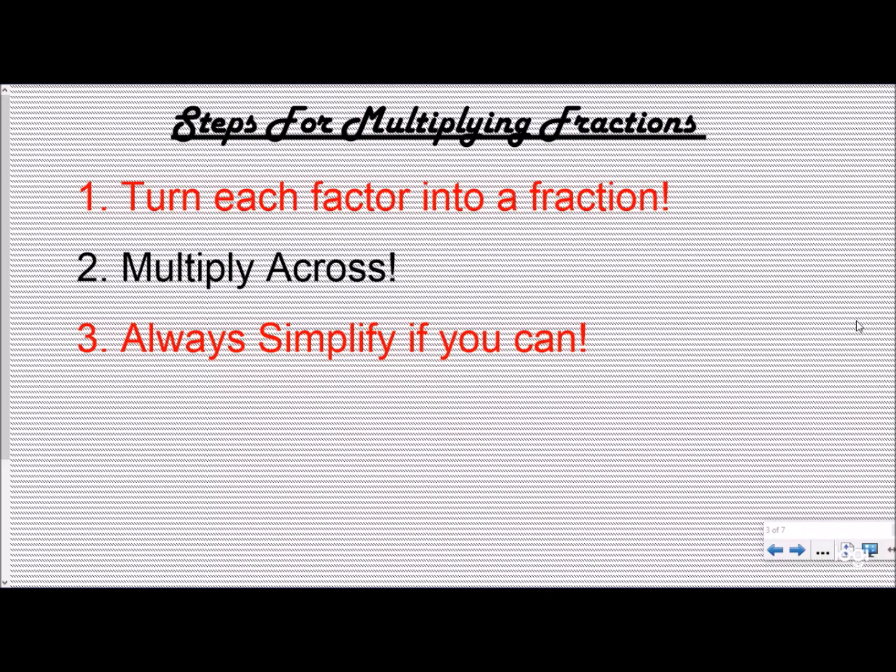Here are your steps for multiplying fractions. First, turn any factor into a fraction. If it's a whole number, turn it into a fraction. If it's a mixed number, turn it into an improper fraction. If it's already a fraction, don't change it. Second, multiply across. And third, as always, simplify if you can.